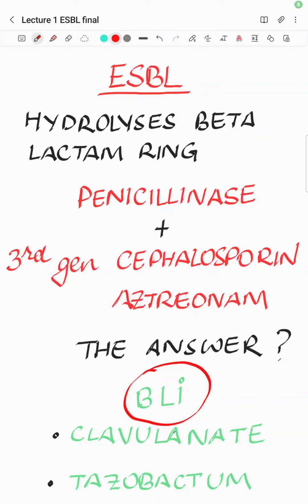Here we will be talking about ESBL — basically beta-lactamases which hydrolyze the beta-lactam rings of penicillinase type and also involving the third generation cephalosporins. As the spectrum got extended from penicillin to third generation cephalosporin, they came to be known as ESBL, and they also hydrolyze the monobactam ring of aztreonam.